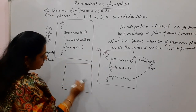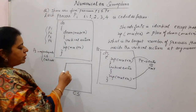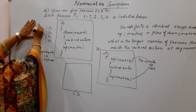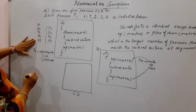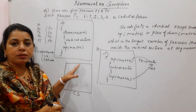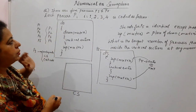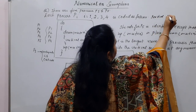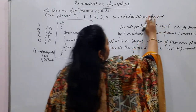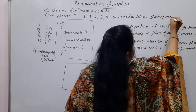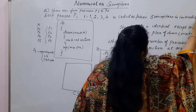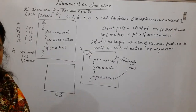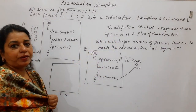We will make one critical section box here and say that this is the critical section. Now we will see how many processes can enter into the critical section. The semaphore value is initialized to 1.